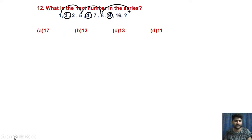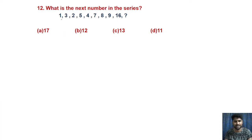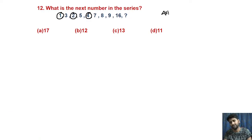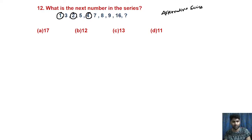This is actually a double series — not a triple series. The first alternate series is 1, 2, 4, 8, 16 — each number doubles. The second alternate series is 3, 5, 7, 9 — odd numbers increasing by 2. So what comes after 9 in the odd number series is 11.